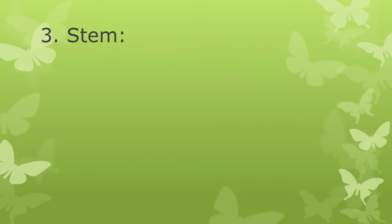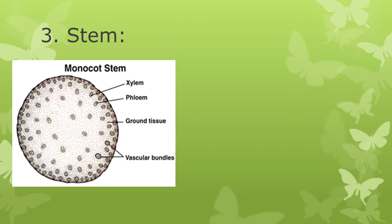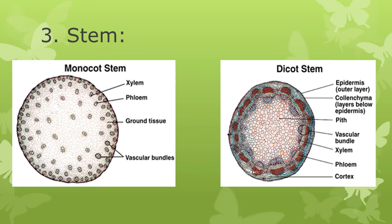Third: Stem. The best way to do this is to make a cross-sectional cut of the stem, then observe how vascular bundles, or conducting tissues, are arranged. If they are scattered throughout the stem, then it is a Monocot stem. And if they are arranged in a ring form, then it is a Dicot stem.